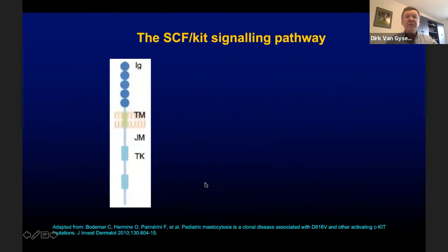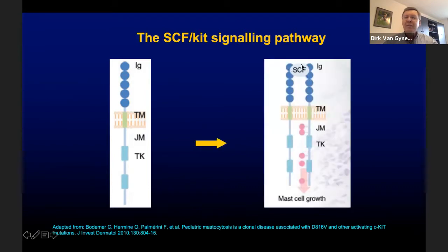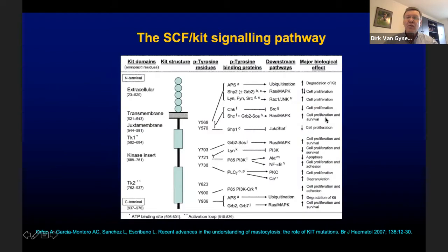Here we see a schematic representation of the KIT protein, with an extracellular domain, a transmembranous domain, a juxtamembranous domain, and a tyrosine kinase domain. Binding of stem cell factor by the extracellular domain of two adjacent KIT proteins results in activation of the intrinsic tyrosine kinase activity. This results in activation of several downstream pathways, all with their own major biological effects.